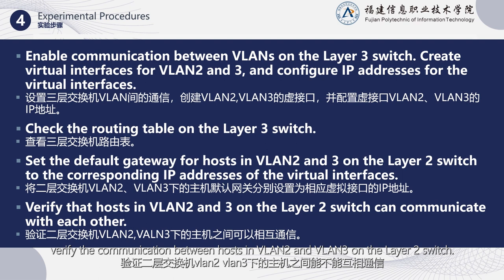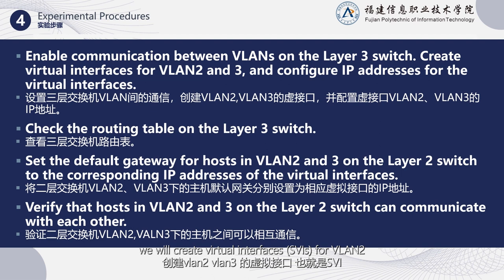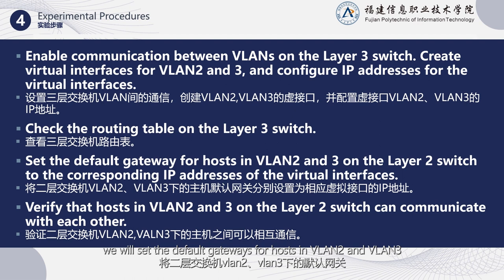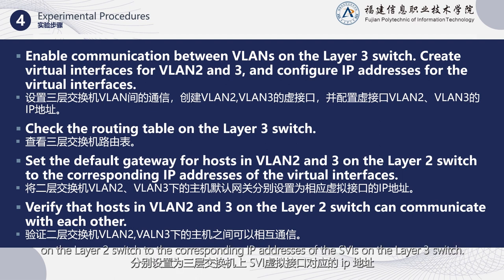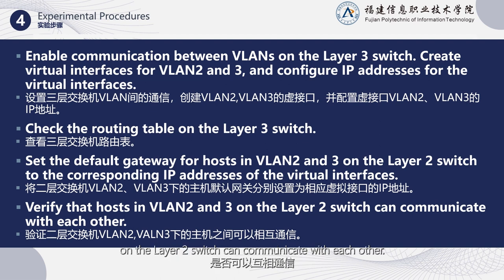Verify the communication between hosts in VLAN 2 and VLAN 3 on the Layer 2 switch. To enable communication between VLANs on the Layer 3 switch, we will create virtual interfaces (SVIs) for VLAN 2 and VLAN 3 and configure their IP addresses. We will also examine the Layer 3 switch routing table. Next, we will set the default gateways for hosts in VLAN 2 and VLAN 3 to the corresponding IP addresses of the SVIs on the Layer 3 switch. Finally, we will verify whether hosts in VLAN 2 and VLAN 3 can communicate with each other.